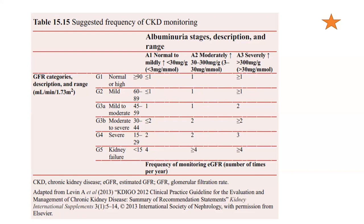For G3A (mild to moderate, eGFR 45–59), monitoring is 1, 1, and 2 times per year for A1, A2, and A3 respectively — so 2 times a year for A3 at G3A. G3B (moderate to severe, eGFR 30–44): ≤2, 2, and ≥2 times per year. G4 (severe, eGFR 15–29): 2, 2, and 3 times per year. G5 (kidney failure, eGFR less than 15): 4, 4, and ≥4 times per year — approximately every three months. Questions have previously been asked about G3B.